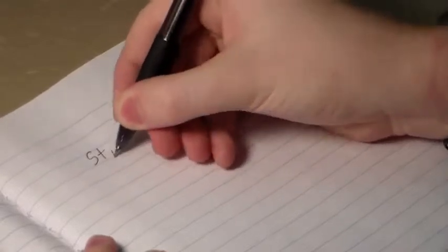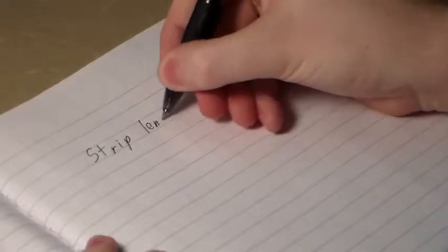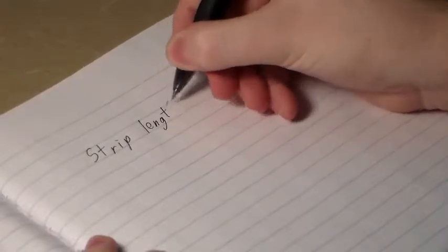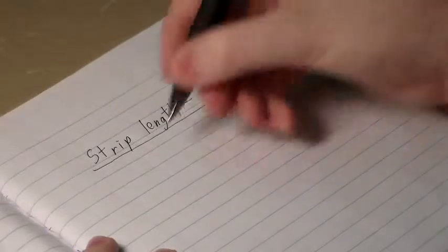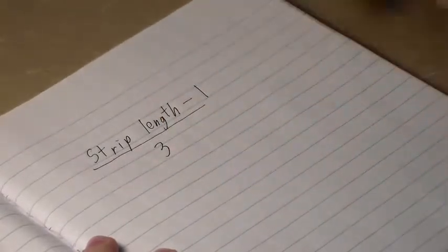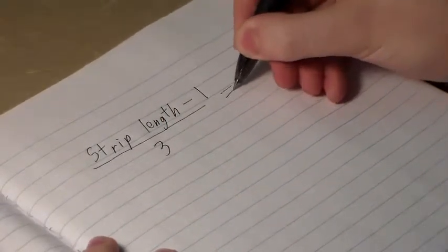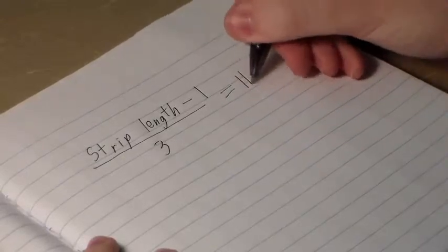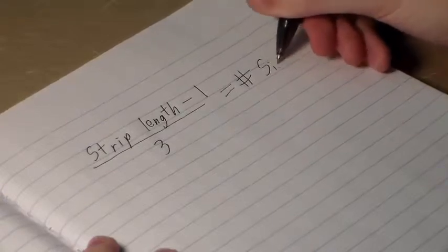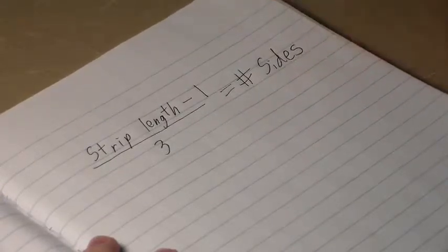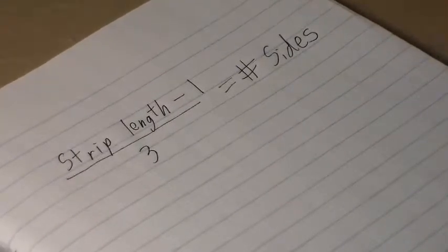We saw a relationship between the number of possible sides and the length of the strip. And as we worked with them more, we came up with a formula relating the strip length and the number of sides, which goes that the strip length minus 1 divided by 3 is equal to the number of sides. This is because when we fold the flexagon, we lose one triangle from where we tape it, and then the repeating pattern of 3 gave us the 3.